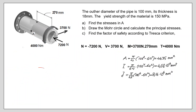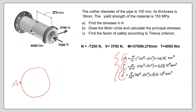The section properties are identified: the cross-sectional area, the moment of inertia, and the polar moment of inertia for torsion calculations. With these section properties and the internal loadings known, we can now find the stresses developed at point A.